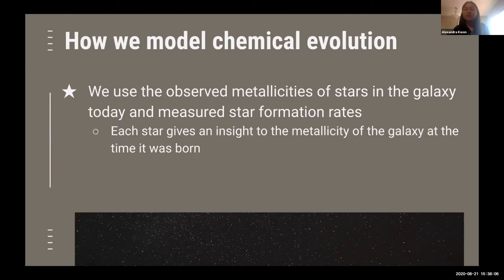With the measured star formation rates that tell us approximately when each star was formed, we can make a roadmap with all the observed metallicities and the observed form times that can tell us how the chemical abundance within the galaxy has evolved over time.